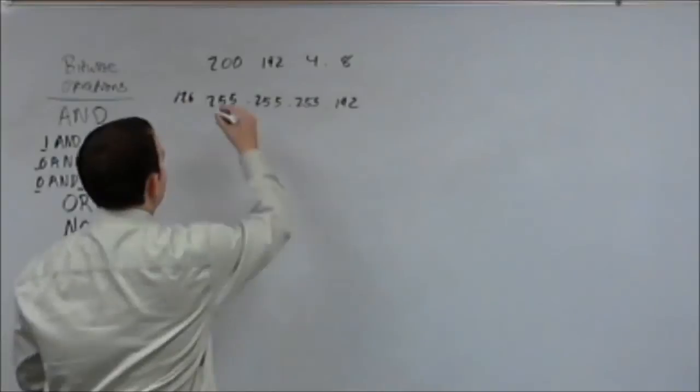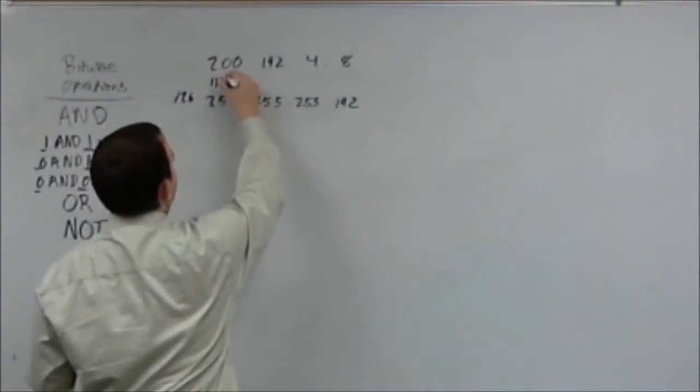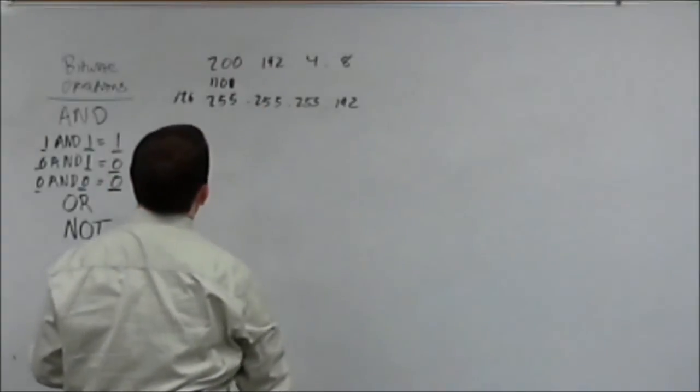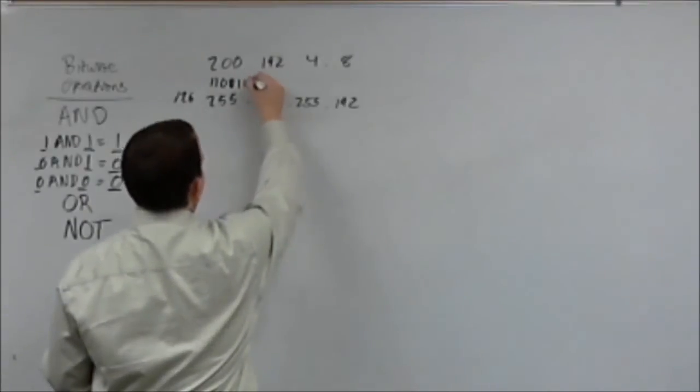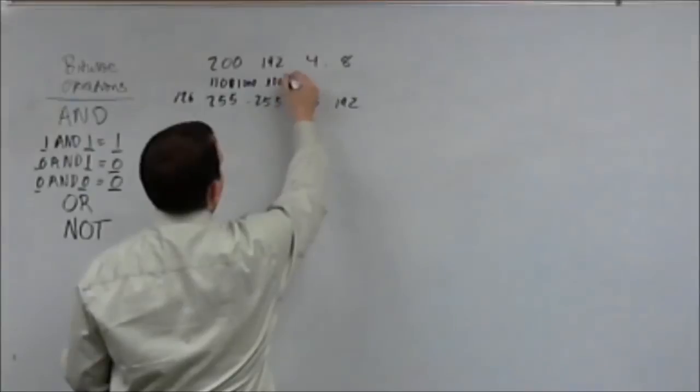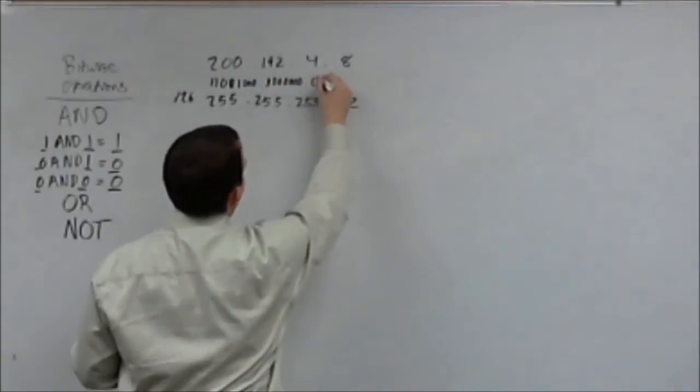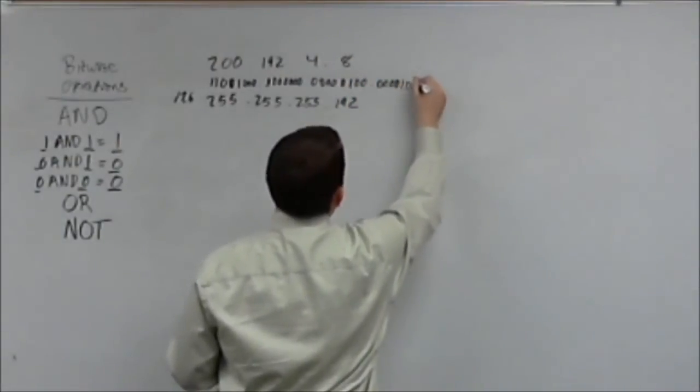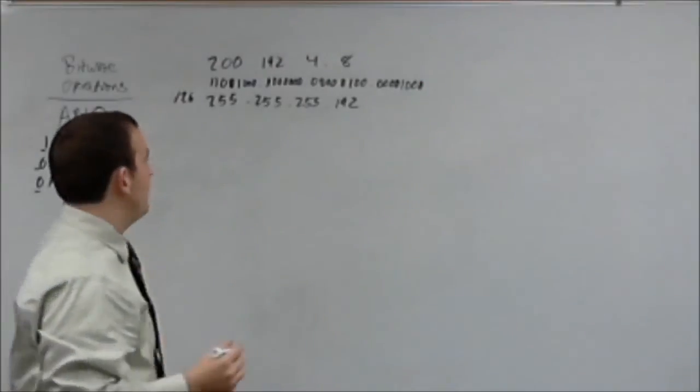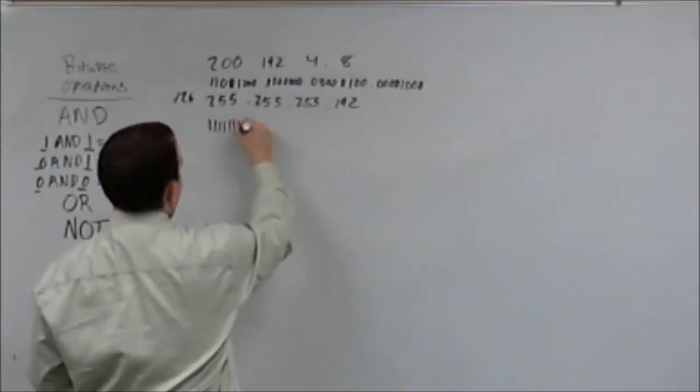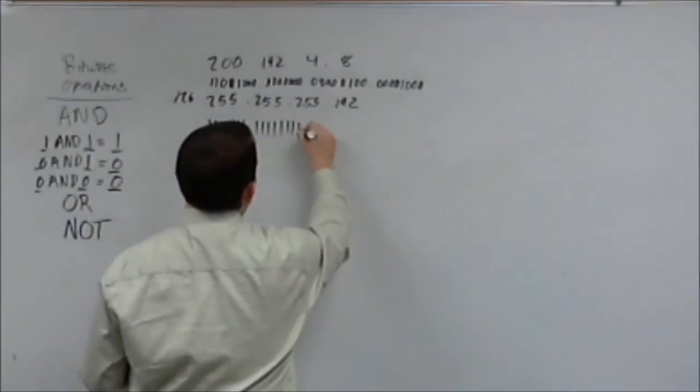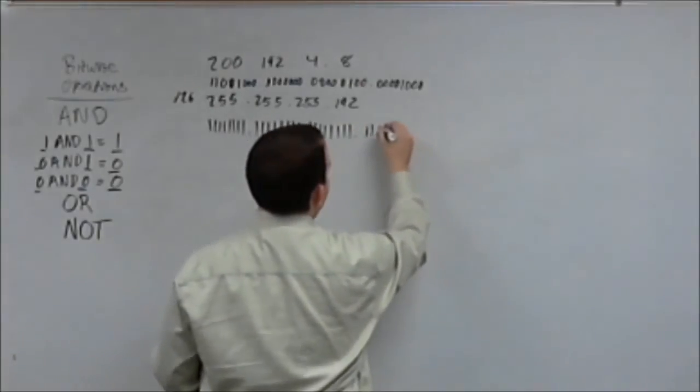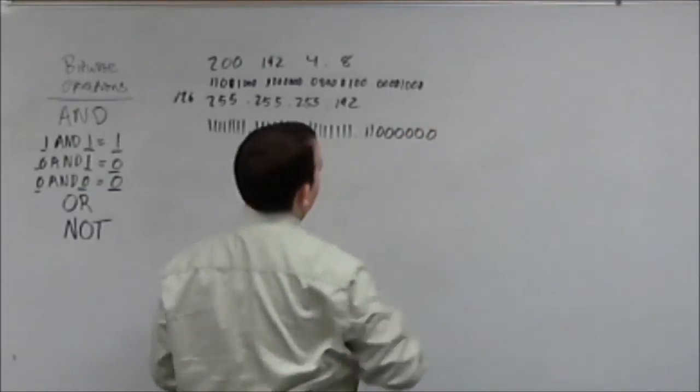Okay, let's write these out in binary. So, you've got 11001000.11000000.00000100.00001000. Okay, now your subnet mask is going to be 11111111 just a whole bunch of ones, clear until we hit 26 ones. And then the other six bits are going to be zeros.